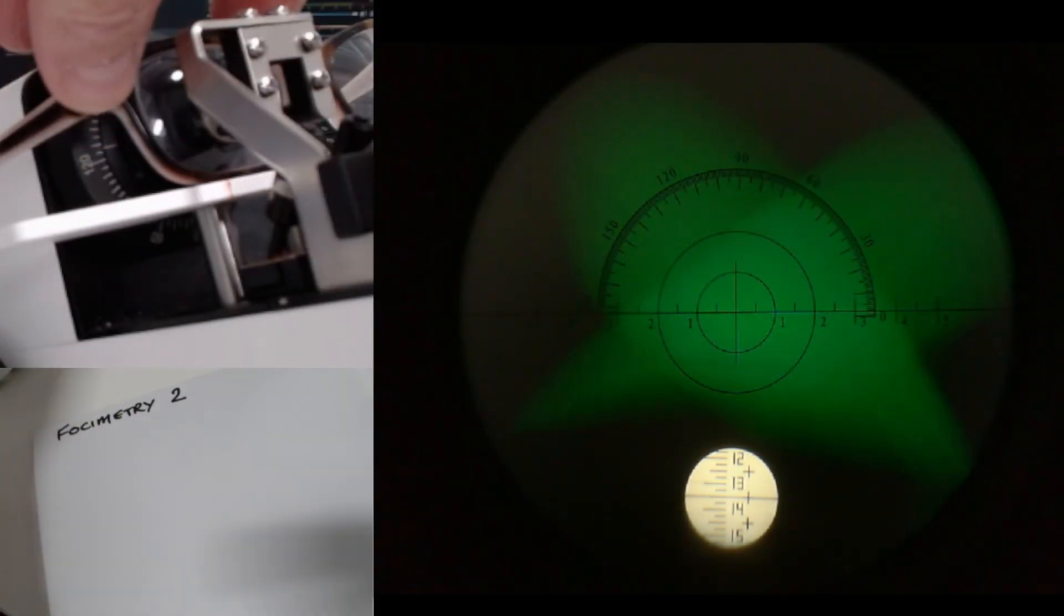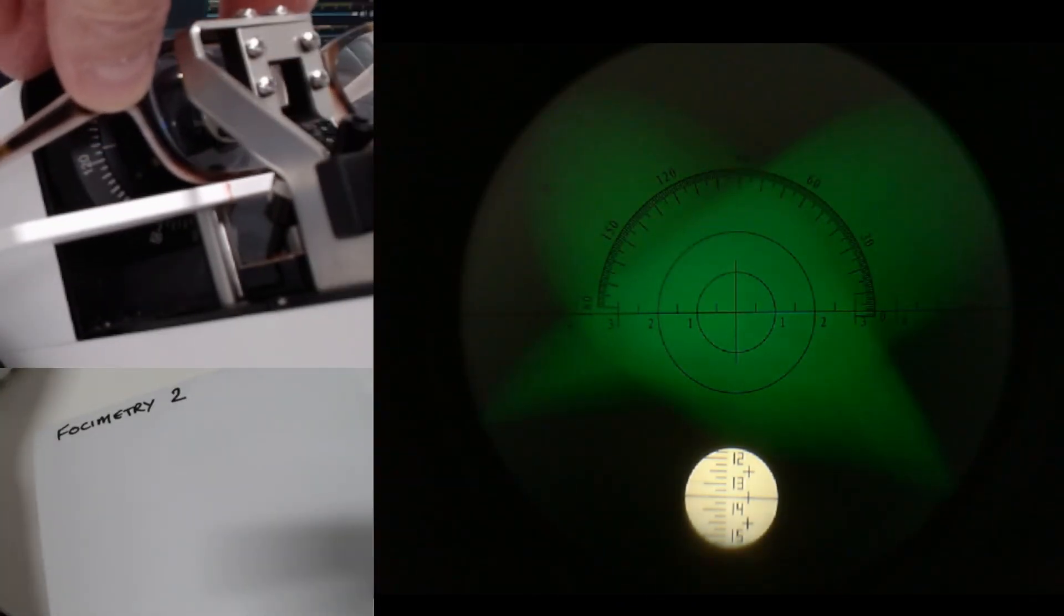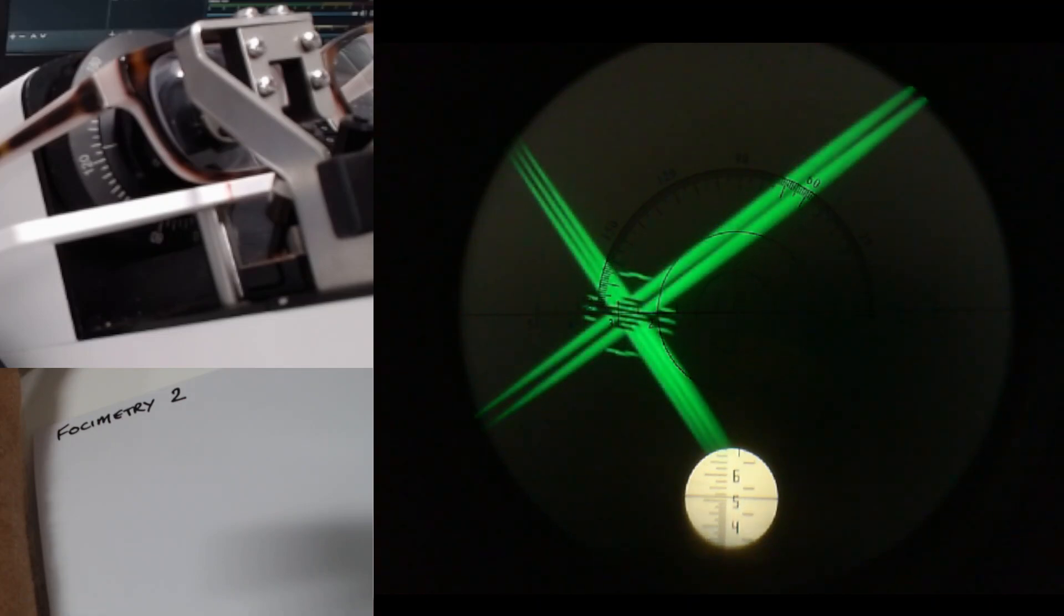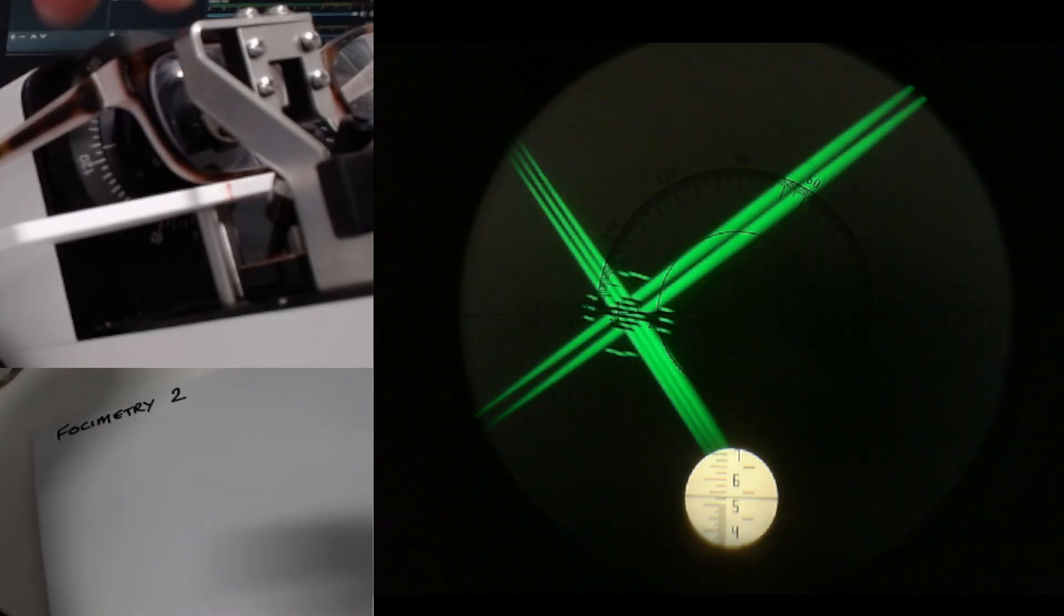I'm going to position the glasses on the focimeter there, get it approximately central, and I'm going to wind the scale down towards the minus. Here we go, you can see that focuses up about there. Instead of focusing up to little dots, you can see it's focused up to little dashes, which means we're dealing with a toric lens.